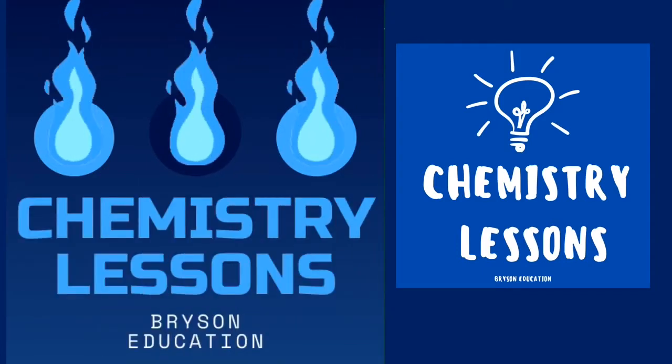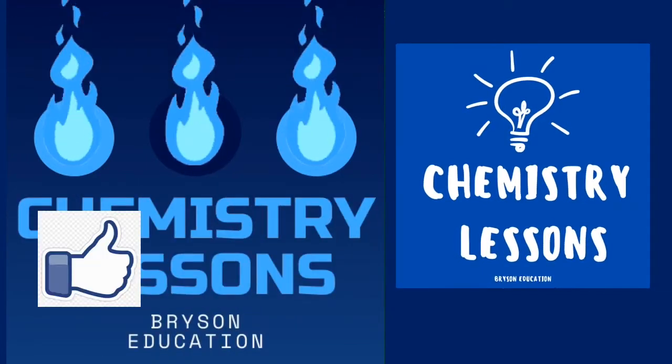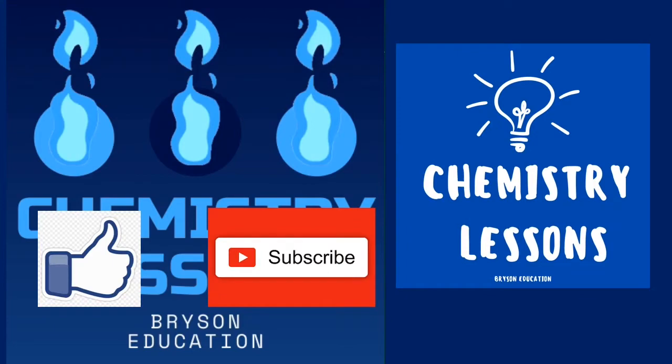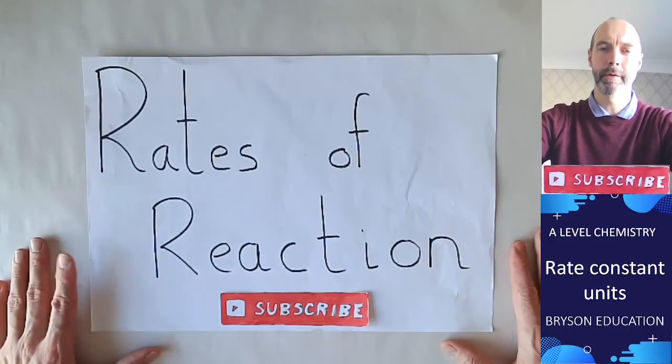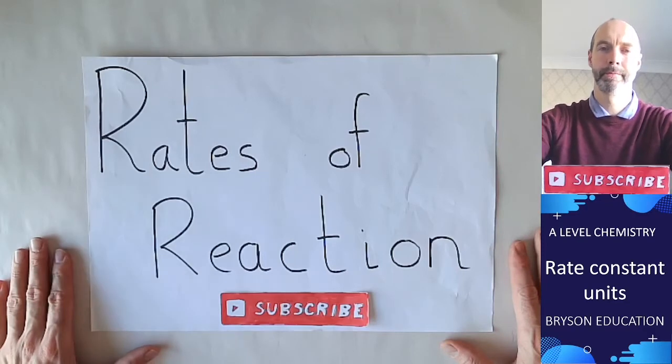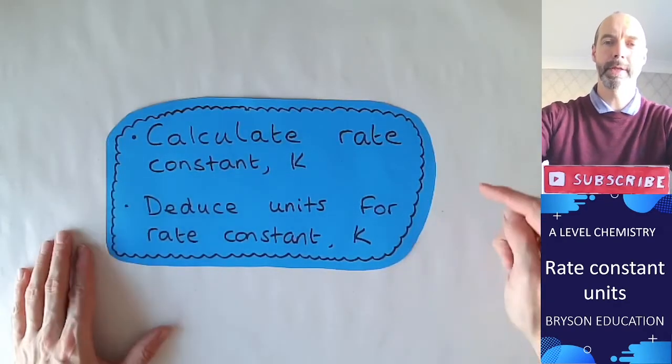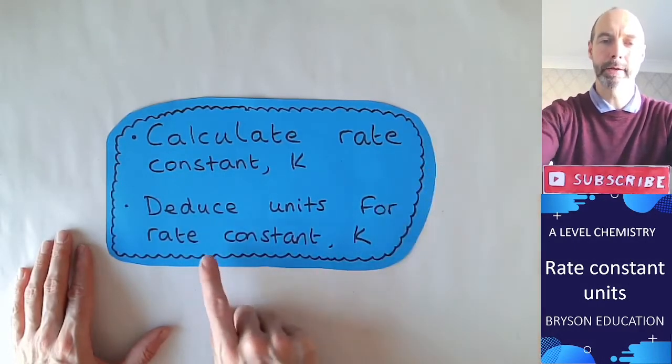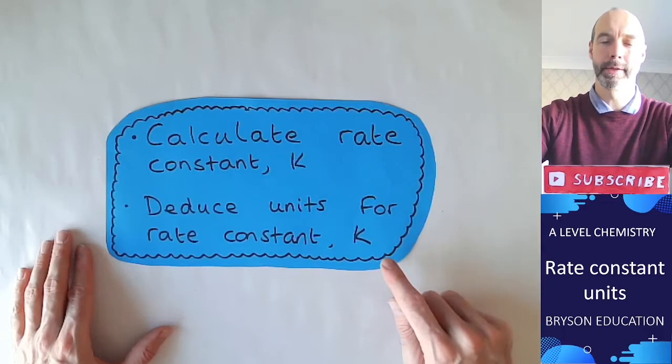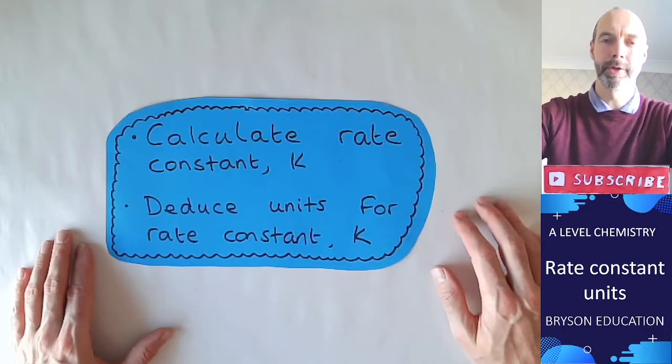Welcome to my channel on chemistry lessons. Please make sure you like and subscribe so you don't miss out on future content. This is an A-level chemistry video, part of the rate of reaction topic, and specifically it's going to focus on how we calculate the rate constant and how we deduce units for the rate constant itself. Very common exam questions.